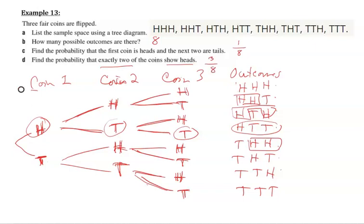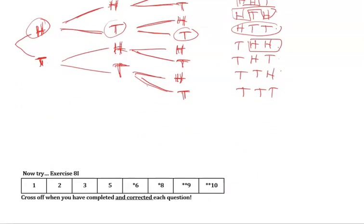And that's how we find the sample space and work out just how many possibilities there are using a tree diagram.